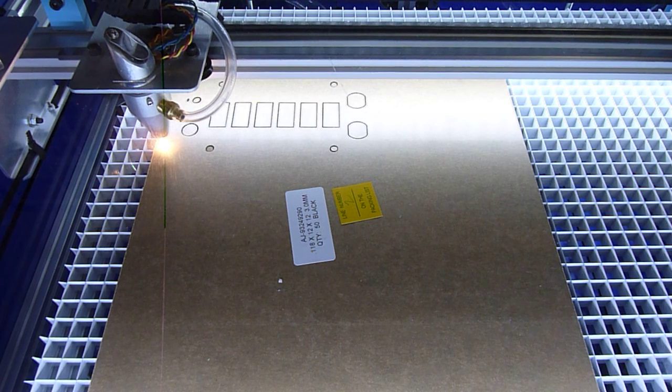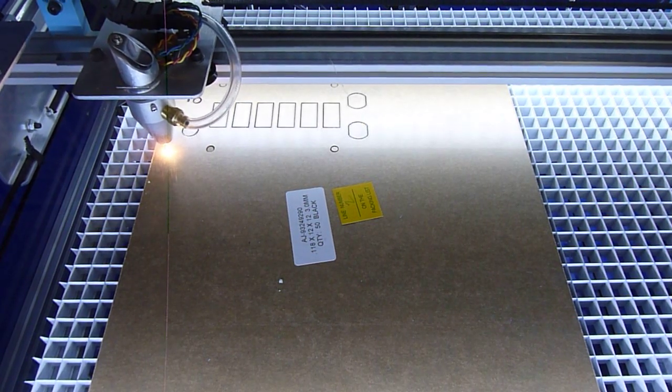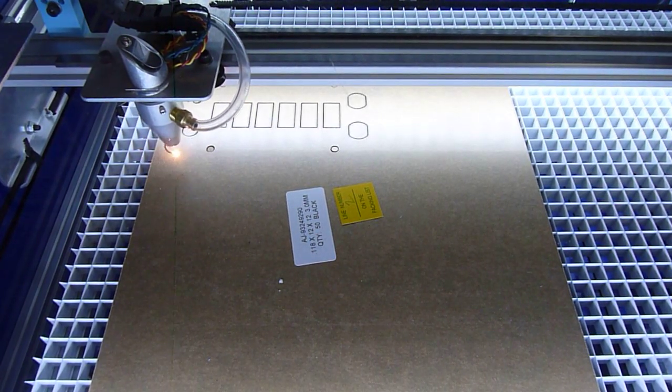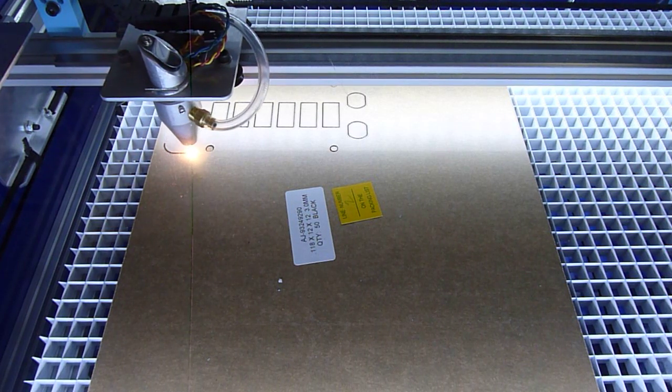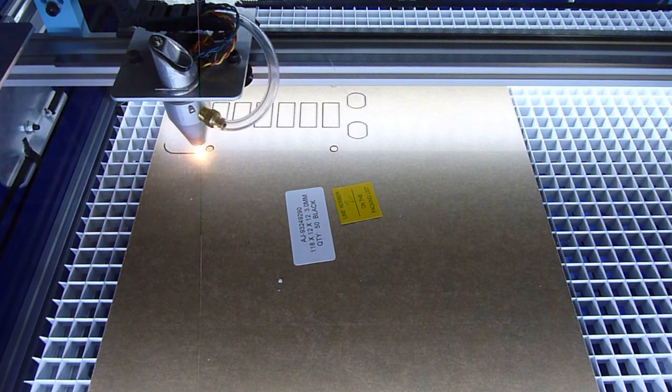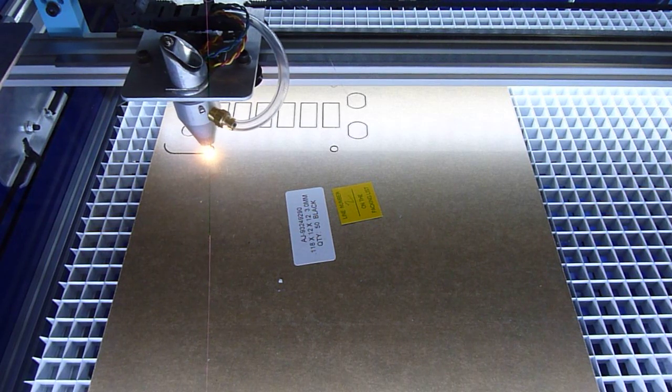Before I tried this on the plastic, I went ahead and did a cutout on paper just to make sure I had all the G-code edited properly. I had to do it by hand; I still haven't built a software program to do it for me. It's on the list of things to do, though.